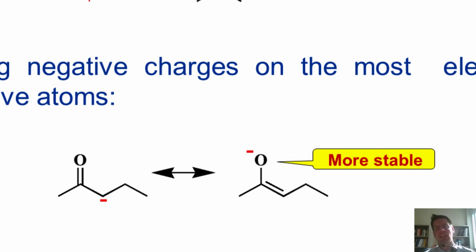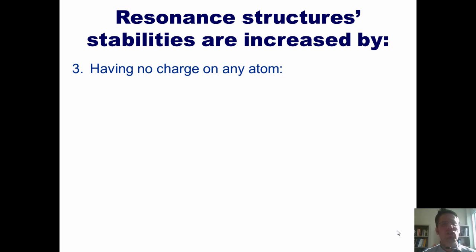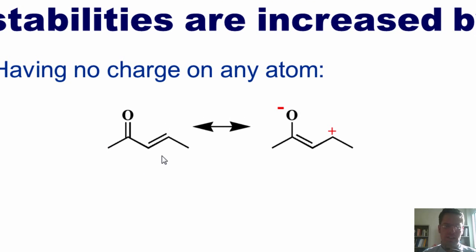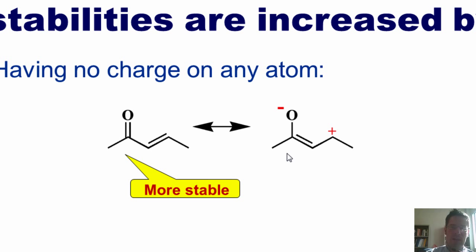Hence, the actual molecule will look more like the molecule on the right in real life. Rule three: having no charge on any atom. If I have a molecule where there are no charges anywhere and everything has a full octet, I could imagine creating a resonance contributor in which pi electrons push up onto the oxygen giving it a negative charge, and other pi electrons swing like a door to form a carbon-carbon double bond, giving me a positive charge on a carbon. These are both completely legitimate resonance contributors, but the one on the left is more stable because every single atom has a full octet and there are no charges anywhere.